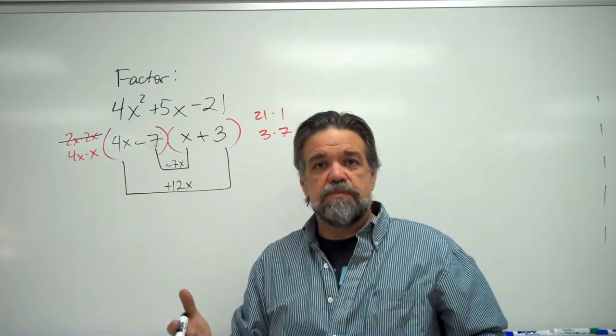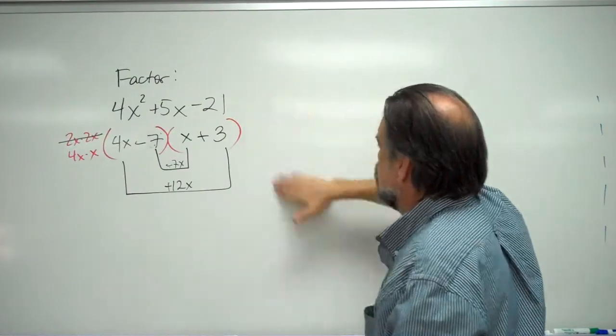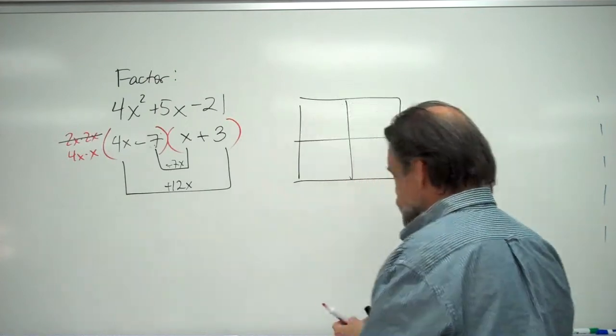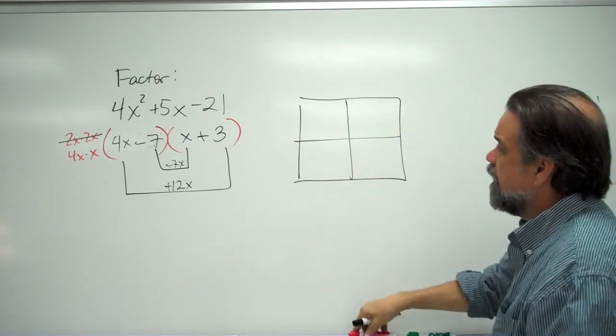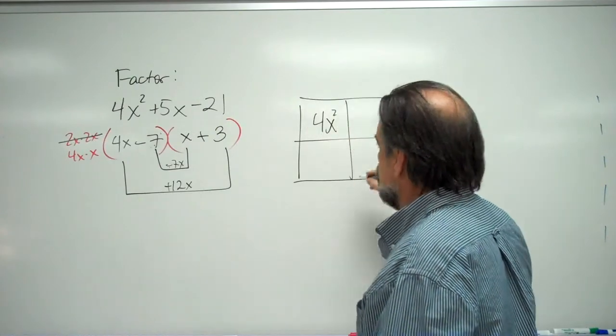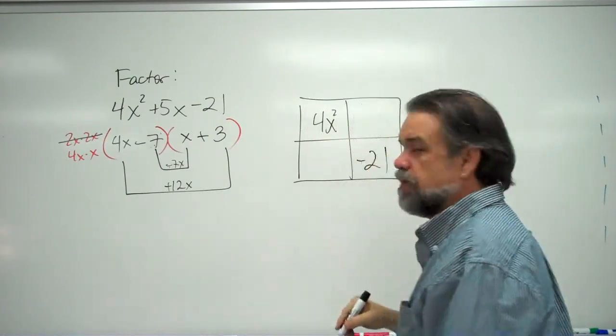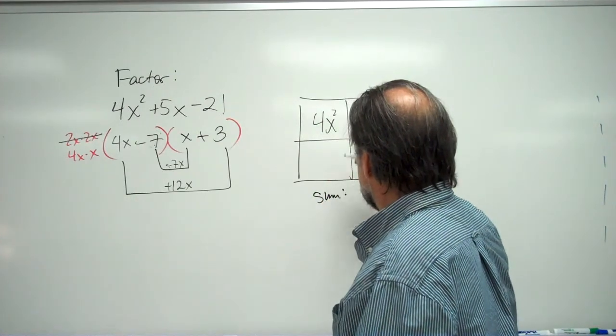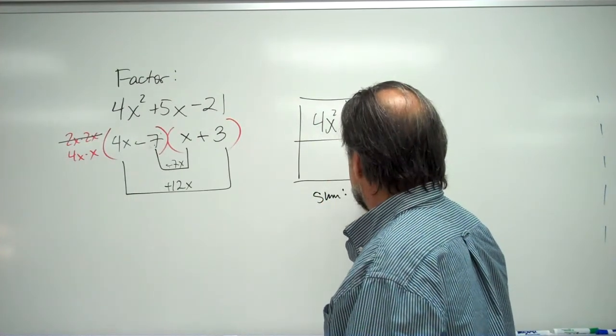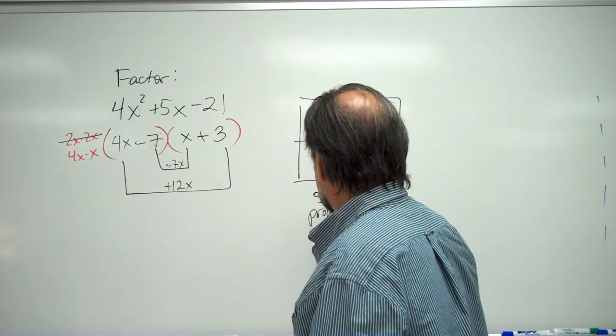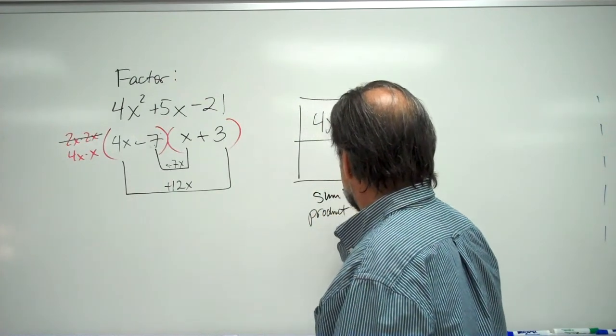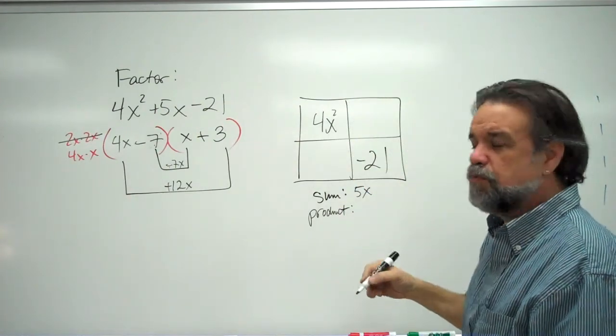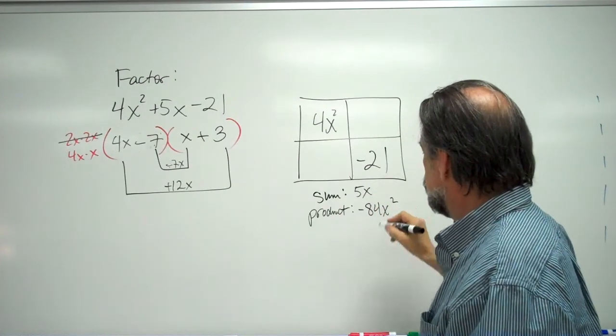Or maybe that's not your cup of tea, and you'd prefer the box. Let's do the box. Again, I've got 4x squared right here. I've got negative 21 right there. I know that the sum of my two terms here is going to be 5x, and I know that the product of my two terms is going to be 4x squared times negative 21, which is negative 84x squared.